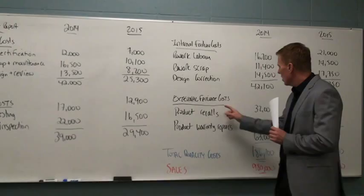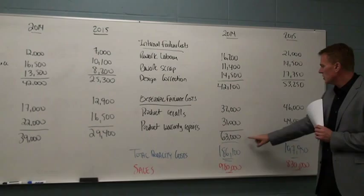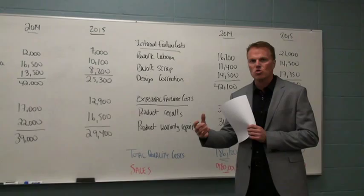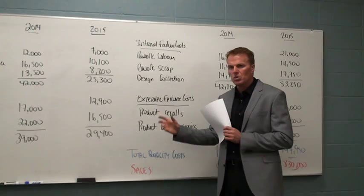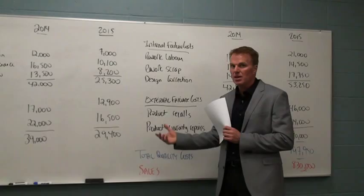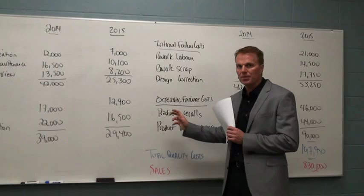We find that in the last section here — external failure costs. What's happening with them? Our external failure costs are really going up: 63,000 to 90. Product recalls are higher. Warranty repairs are going higher. This is really bad for our reputation if this is the direction. And one of the things that this report doesn't capture, but something we always have to consider, is the opportunity cost. Are we losing sales because our reputation is going down? That would really inflate this external failure cost to an even much higher number.